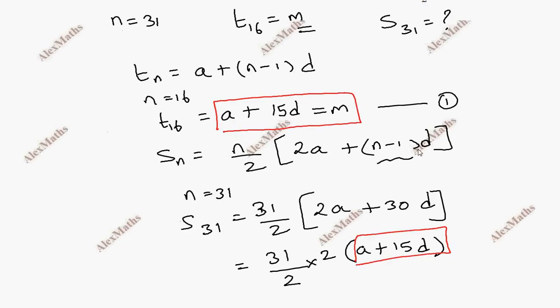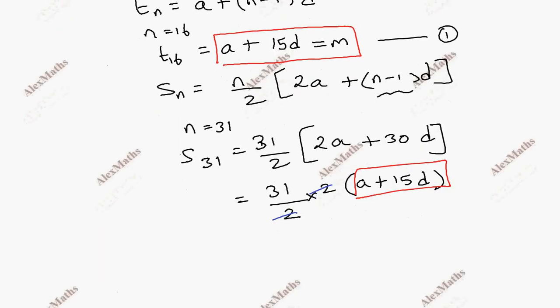31 by 2, bracket open, 2a plus n minus 1 into d, which gives us 2a plus 30d.